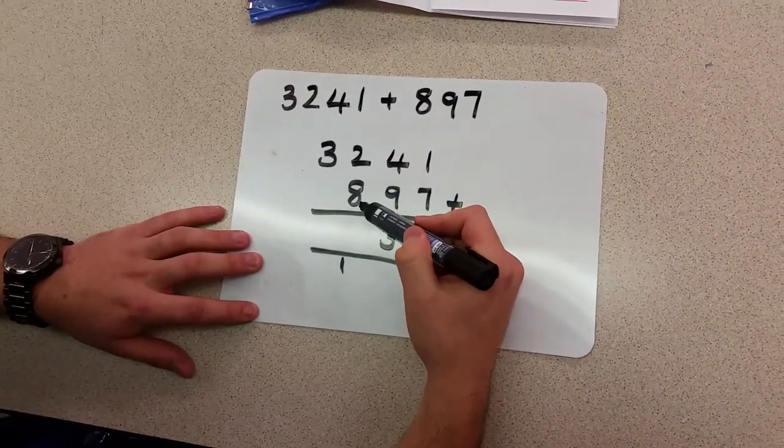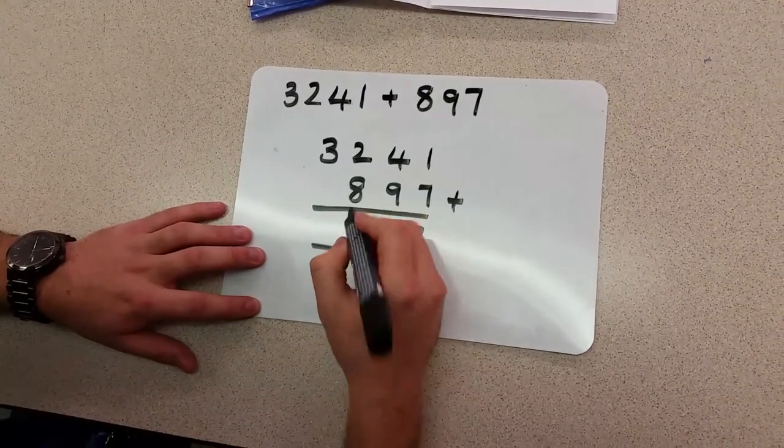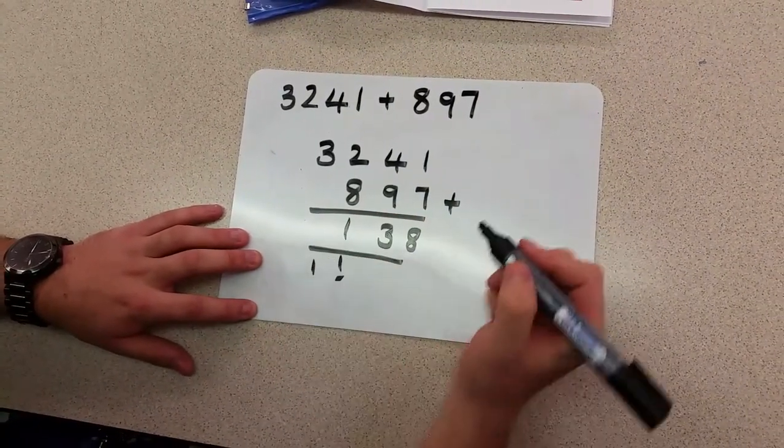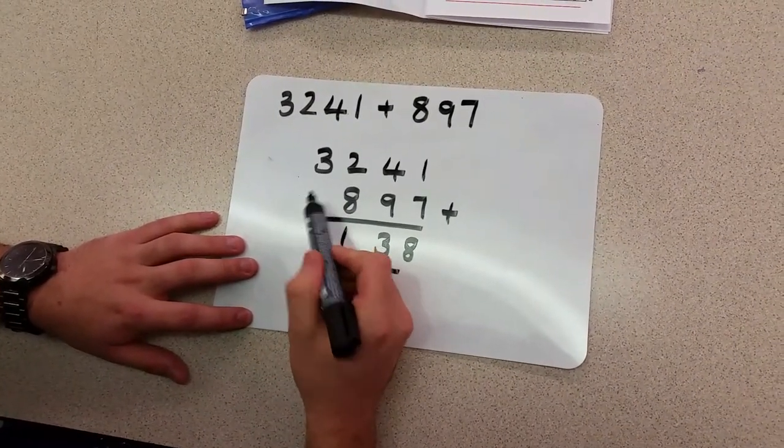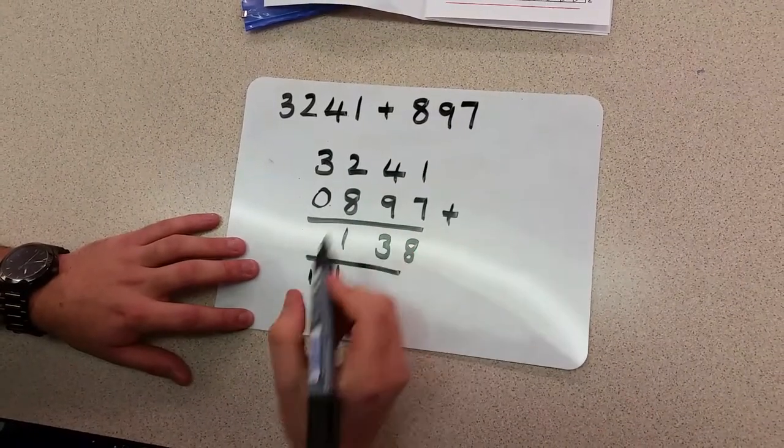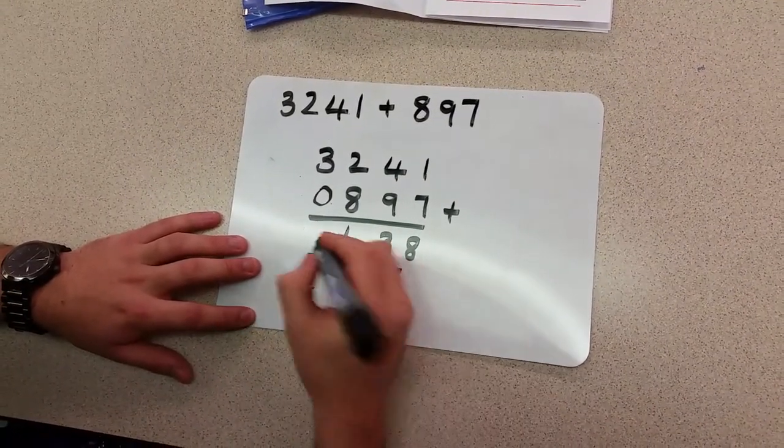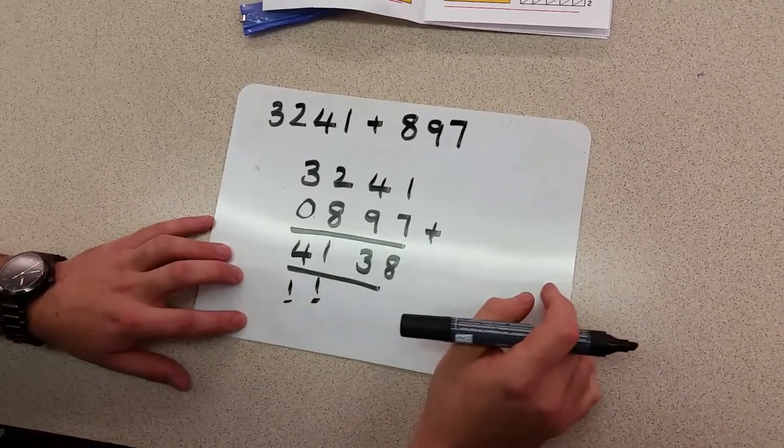We're actually going to add 2 to 8, which gives us 10, but what we can't forget to do is add this 1. That will give us 11. Finally, we're going to take this 3. This here is empty. We can write a 0 if we'd like. So we have 3 add 0, which is 3. But again, we need to remember to add the 1, which leaves us with 4. So the answer to this addition is 4,138.